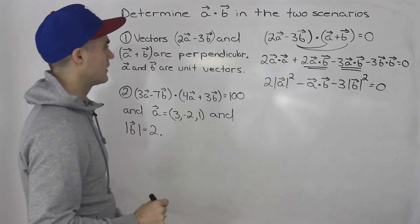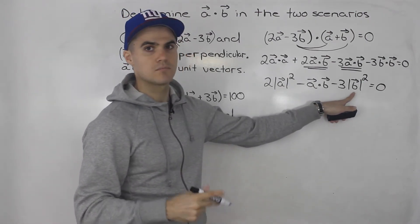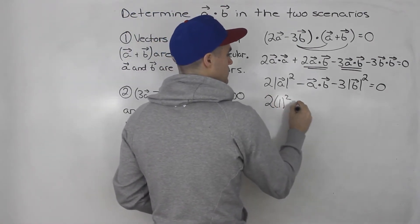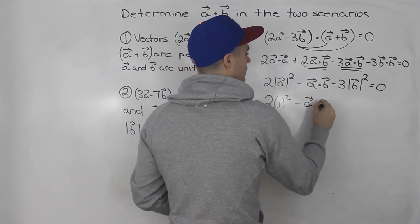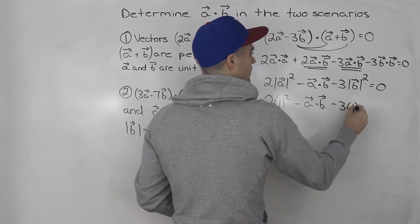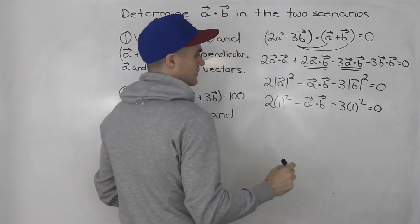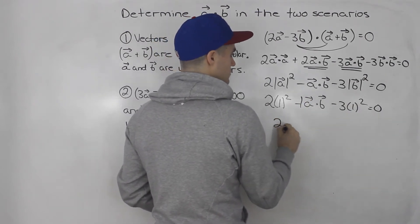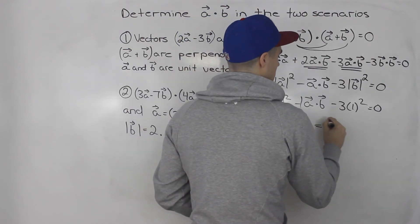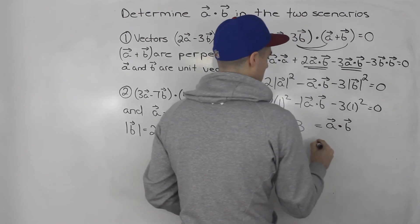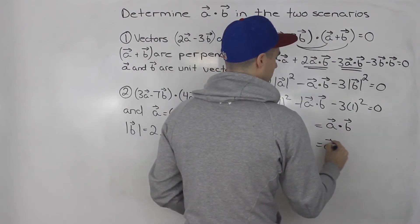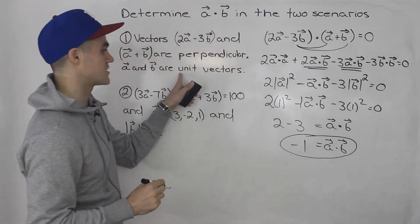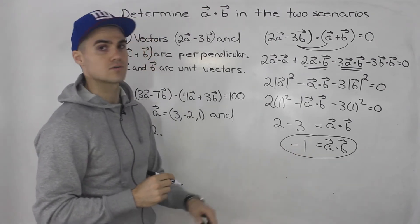Now we can plug in the magnitudes for a and b because we know they are unit vectors. So we get 2 times 1 squared minus a dot b minus 3 times 1 squared equals zero. Bringing the a dot b over, we get 2 minus 3 equals a dot b, which is negative 1. So a dot b equals negative 1 for the first scenario.